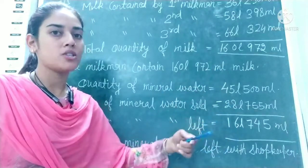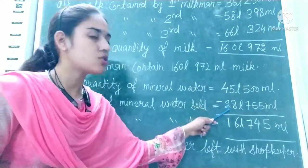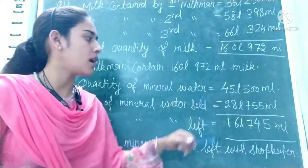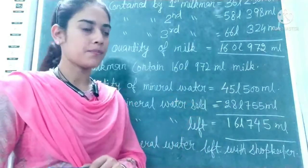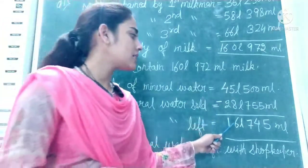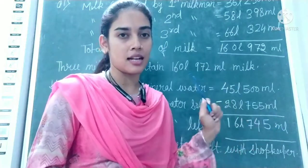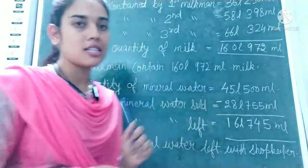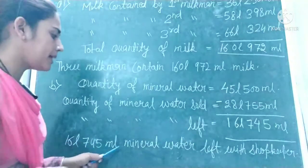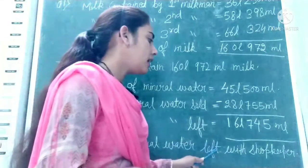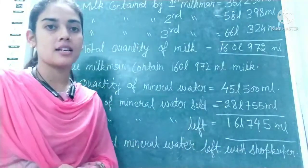If we subtract the sold-out quantity from the total quantity, we can get the remaining quantity. The left quantity is 16 litres 745 millilitres. This is the answer. The last line: 16 litres 745 millilitres of mineral water is left with the shopkeeper. This is the answer to part B.